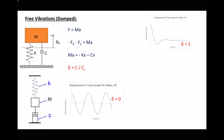In underdamping, our damping ratio is less than one. In order for this fraction to be less than one, our damping coefficient must be smaller than our critical damping coefficient — we're not providing enough damping to the system, we need a stronger damper. What we see on the graph is we still have oscillations about the mean point before the displacement is eventually restored to zero. The lower this damping ratio, the more oscillations we would see before the mass is restored to the midpoint.